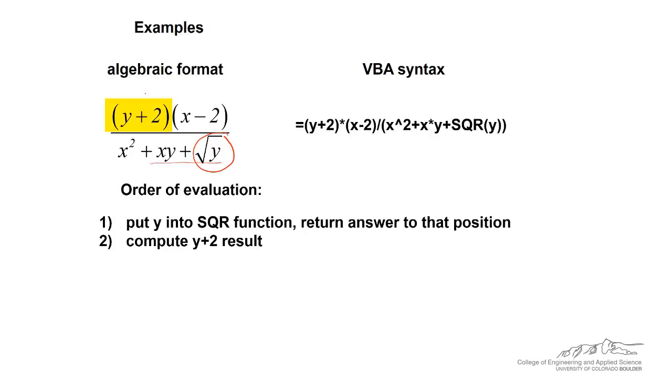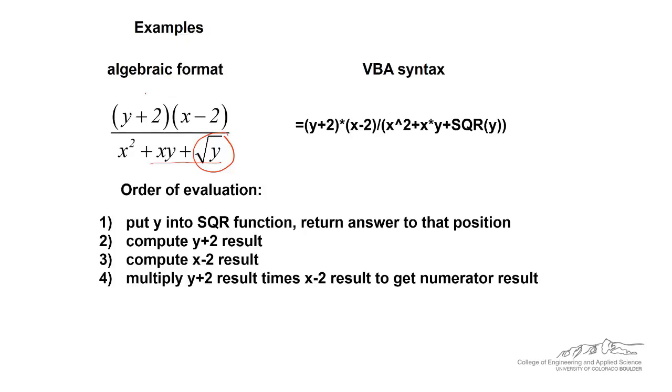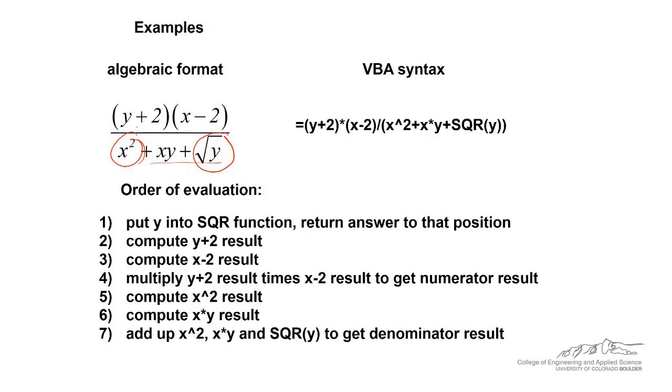So it computes the y plus 2 result, then it computes the x minus 2 result, it then multiplies those two to get a numerator result. And then it starts with the left on the denominator, calculates the x squared result, and it computes the x times y result, and adds up all three in the denominator. And then it divides the numerator result by the denominator result to get the final answer. So that's sort of how VBA calculates these different things. It's a lot like your programming calculator where it works left to right.